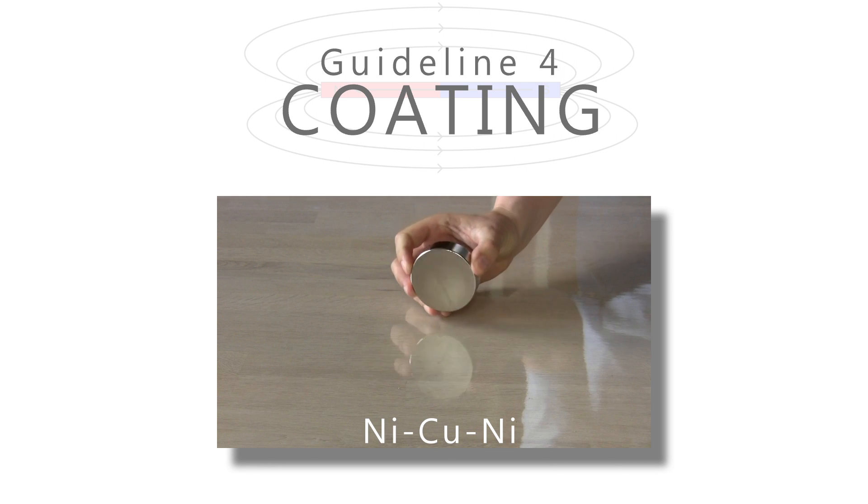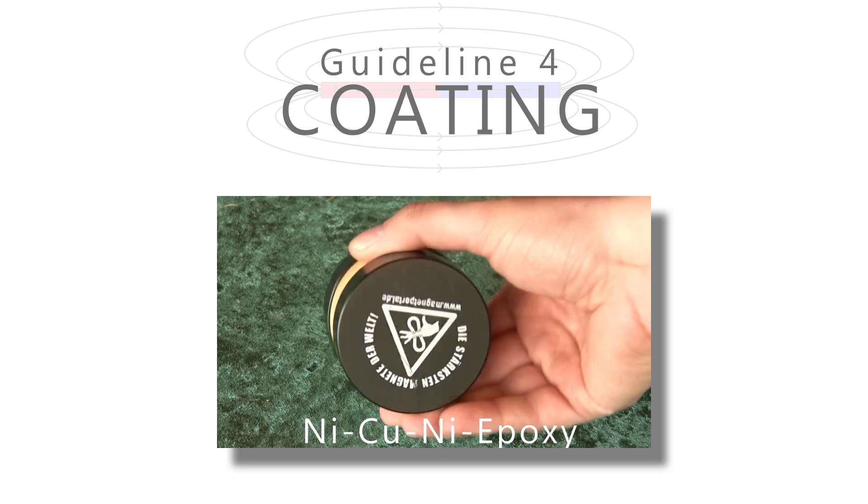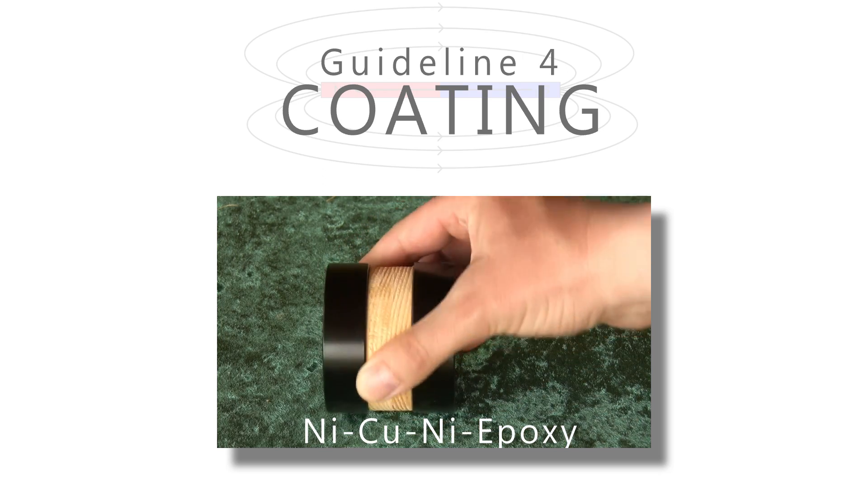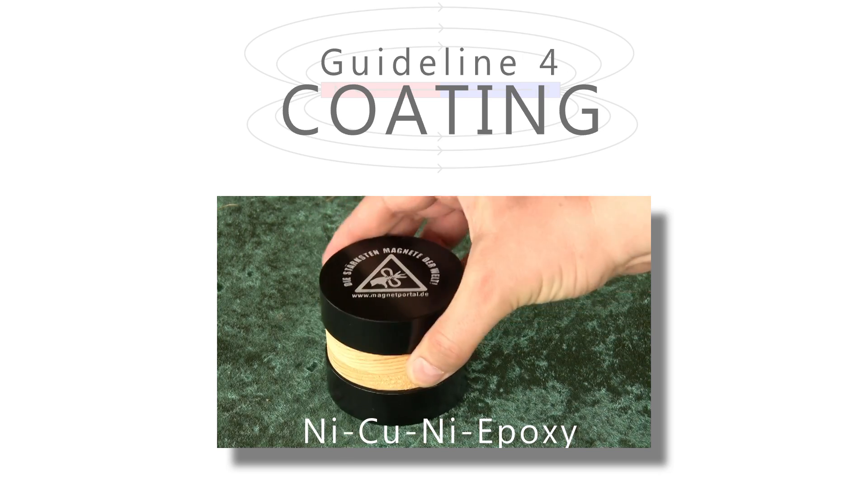The last guideline is about coating and this is the least important. The standard for neodymium magnets is a triple layer coating of nickel-copper-nickel. For example, this is good for a beginner magnet. There are other more advanced options but you don't need them and other coatings limit the selection of magnets and often add to the price.